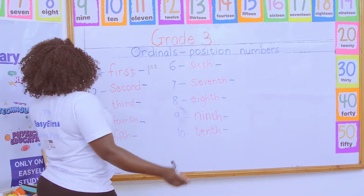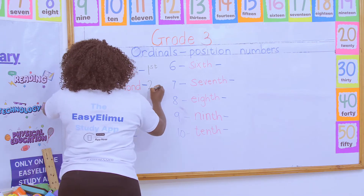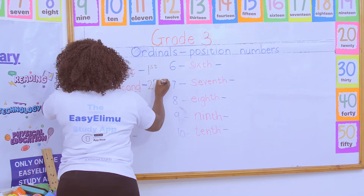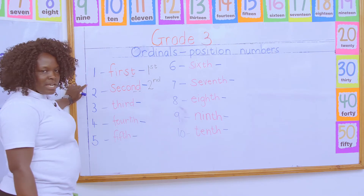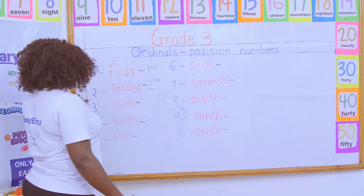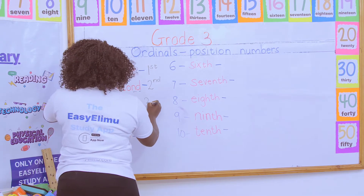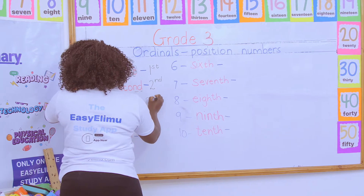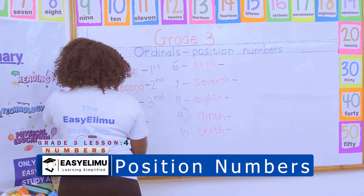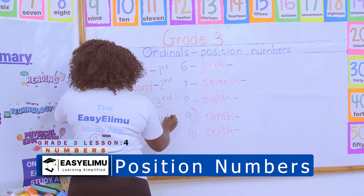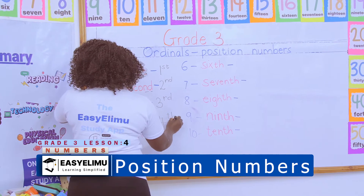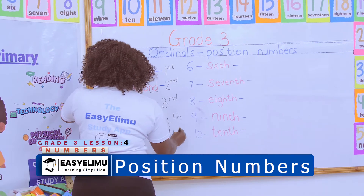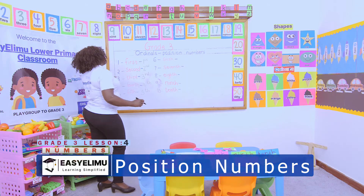What about the second one? You take the number two, then the last two letters which is 'nd' to form 2nd. What about the third one? Three, then the last two letters which is 'rd' to form 3rd. Then four with the last two letters to form 4th. Then five with the last two letters to form 5th.